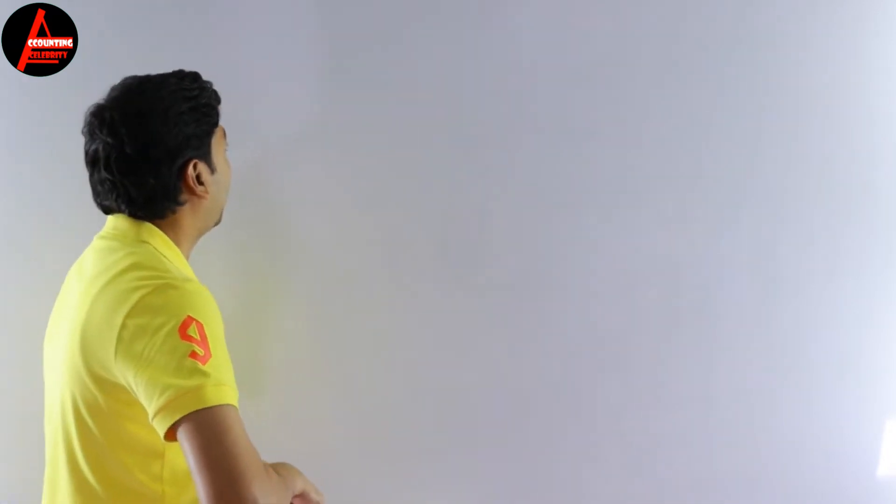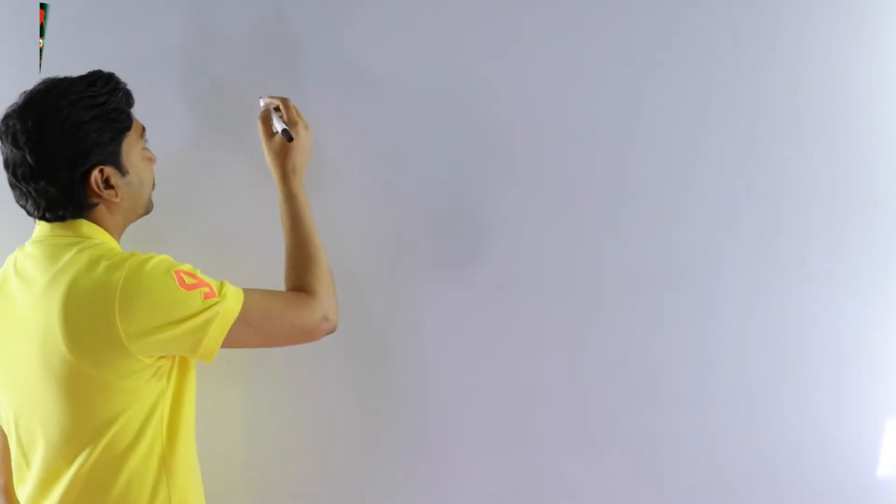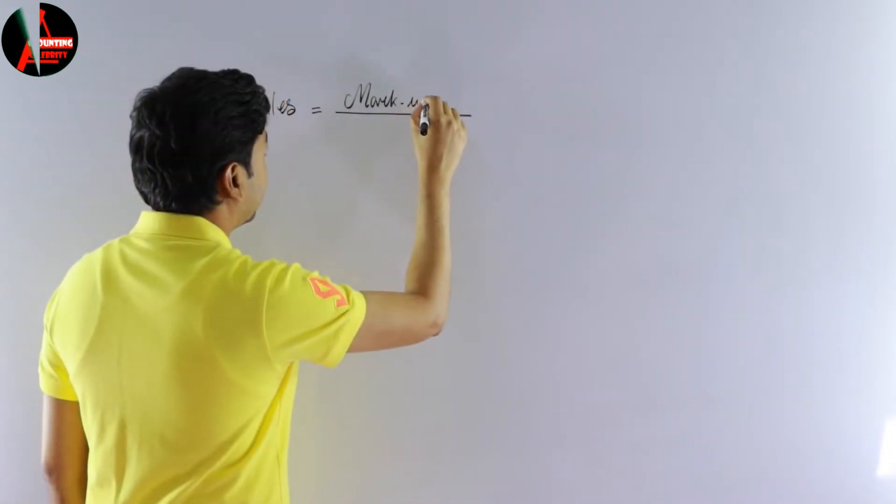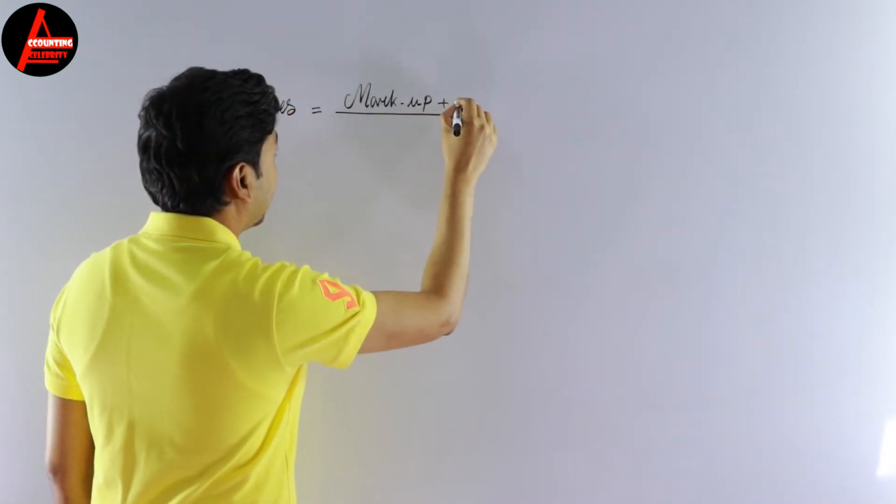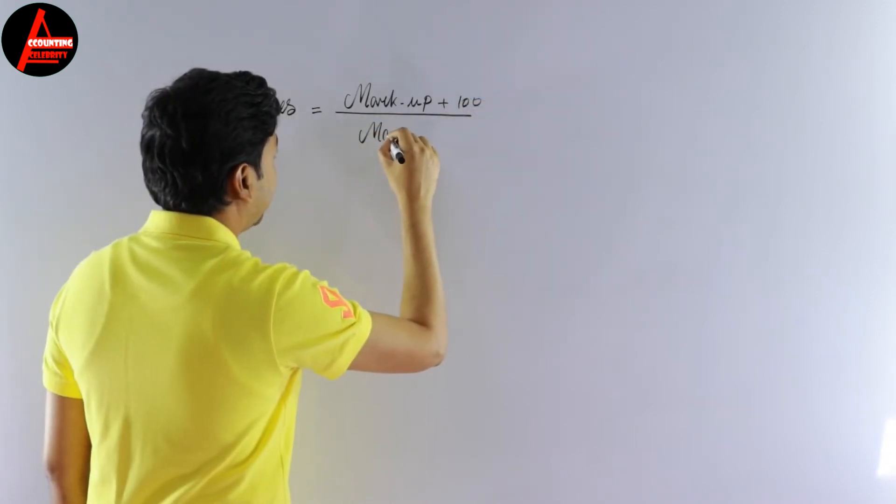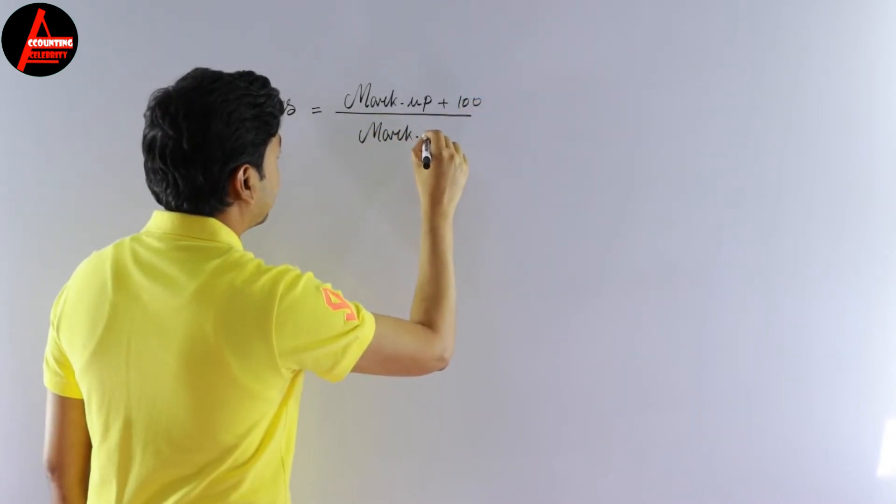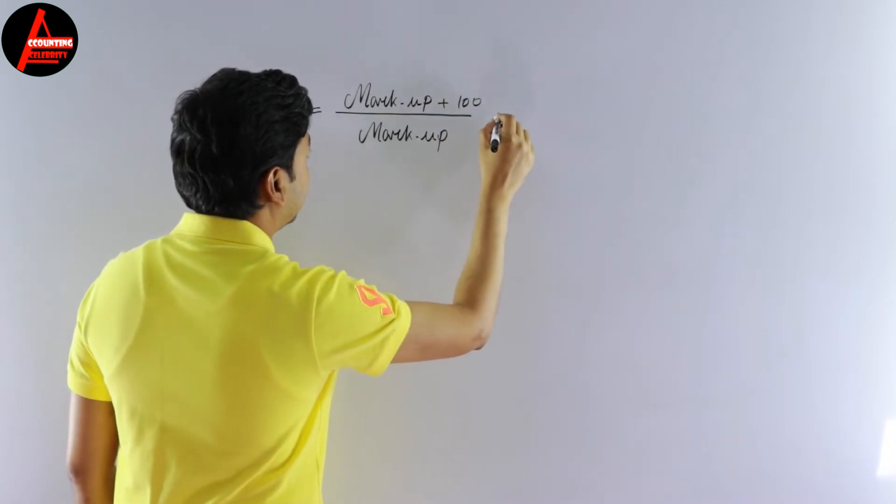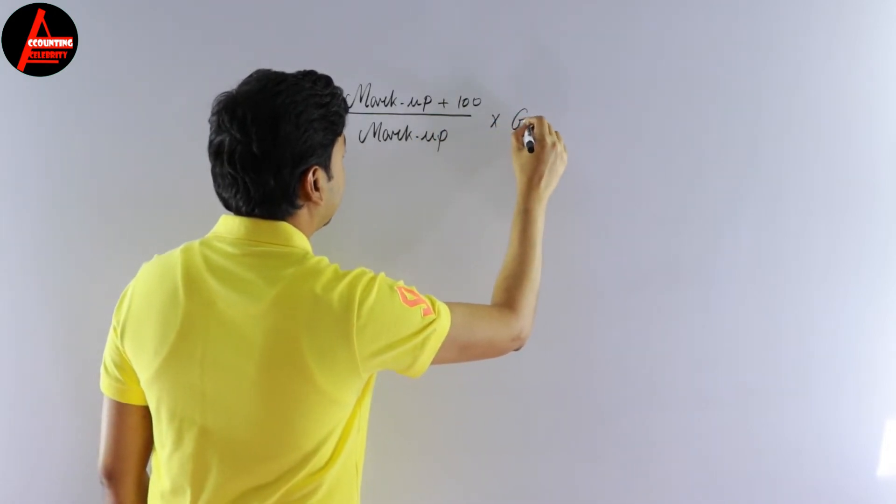And we'll see an example question to calculate selling price. So first of all, what is the formula? We know selling price or sales equal to markup plus 100 divided by markup times gross profit.